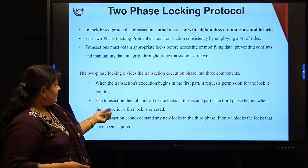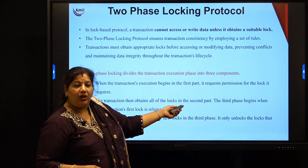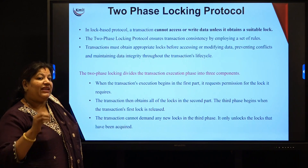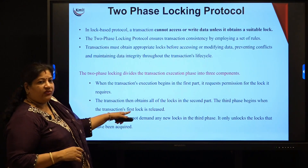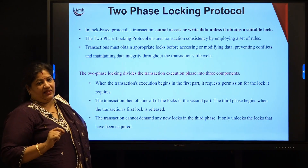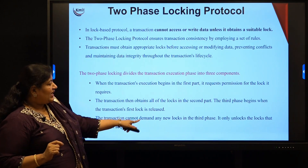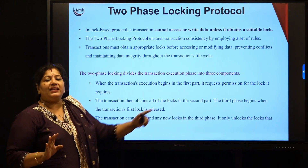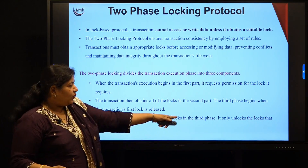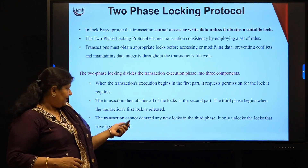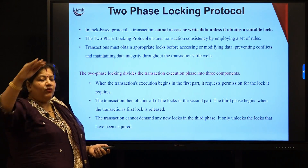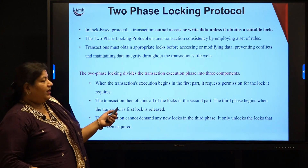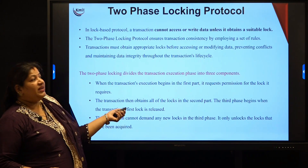Then in the second phase, the transaction obtains all the locks. The third phase begins when it starts releasing the lock — when the first lock is released. The transaction cannot demand any new locks in the third phase; it can only release, only unlock the locks that it has acquired. That is why we say two-phase — basically it is shrinking and diminishing.